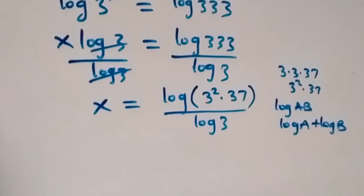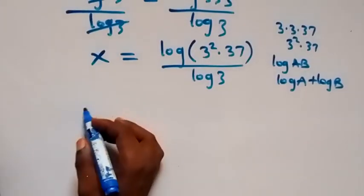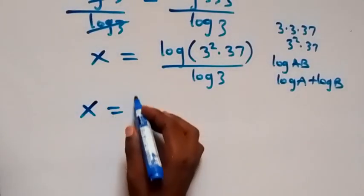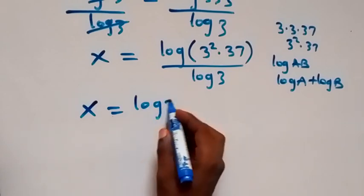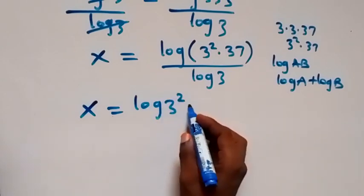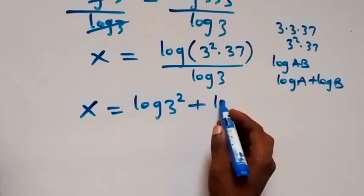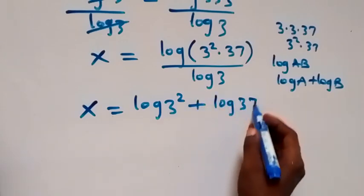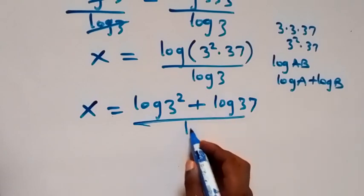Then applying this from here, we have x now equals to log 3 squared plus log 37, then all over log 3 from here.